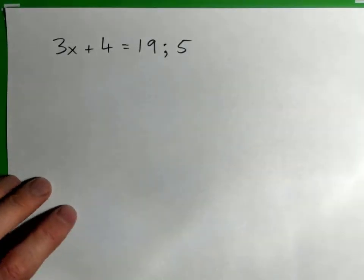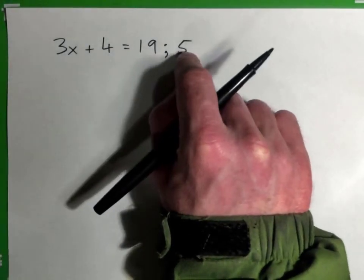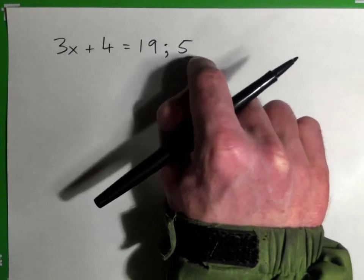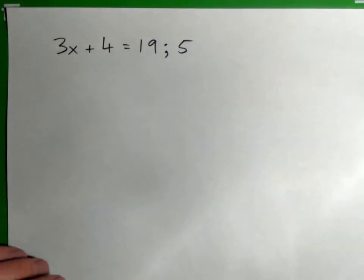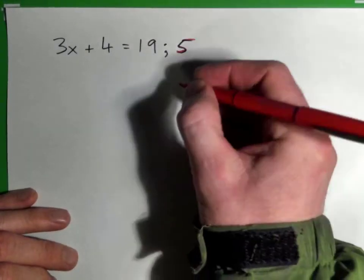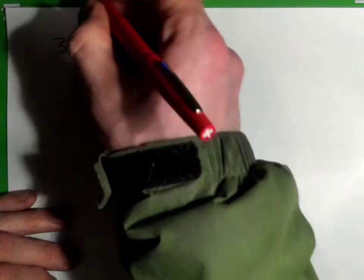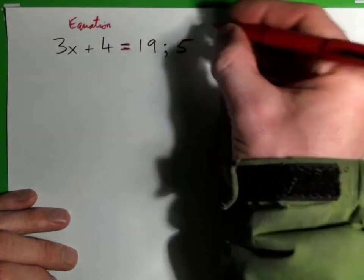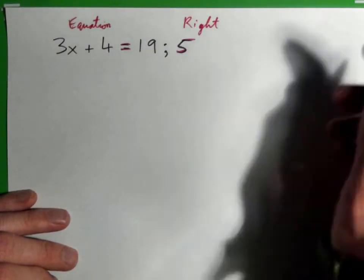Alright, so 3x plus 4 equals 19 semicolon 5. The instructions are to check to see if the number to the right of each of the following equations is the solution to the equation. This 5 is the number to the right. This here is the equation because it has an equal sign. So this is your equation and this is the number to the right, the 5.